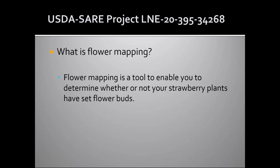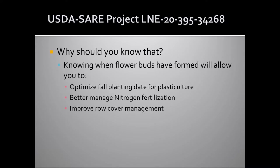Flower mapping is a tool that enables you to determine whether or not your strawberry plants have set flower buds. Why would you want to know when your flower buds have started to form? If you know when your flower buds have started to form, you can better optimize planting date depending upon cultivar. It'll help you better manage nitrogen fertilization, because nitrogen fertilization in the fall has a huge impact on flower formation. If you apply nitrogen too early, you can reduce flower formation, and if you apply it too late, you basically have no effect on flower formation. But if you apply nitrogen about a week after you've noticed the first signs of flower buds forming in the fall, you can greatly increase the number of flowers formed. In addition, you can improve your row cover management if you know whether you have branch crowns formed.